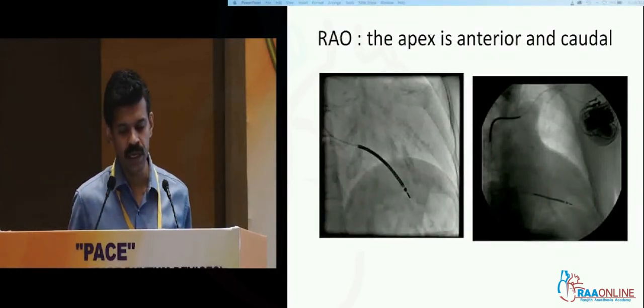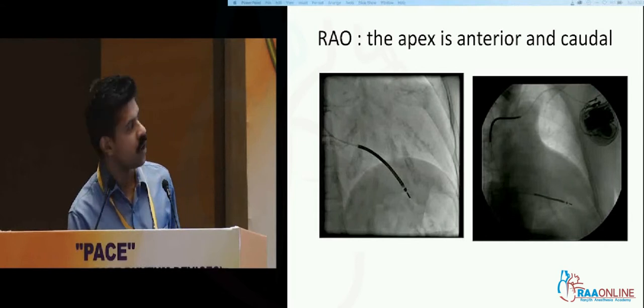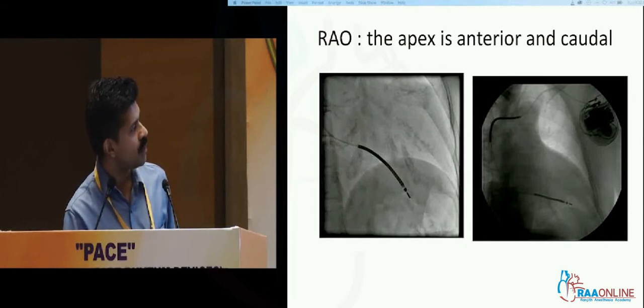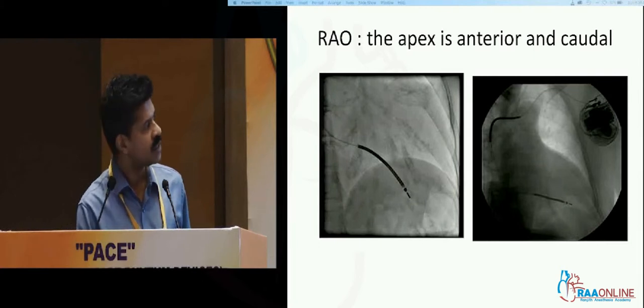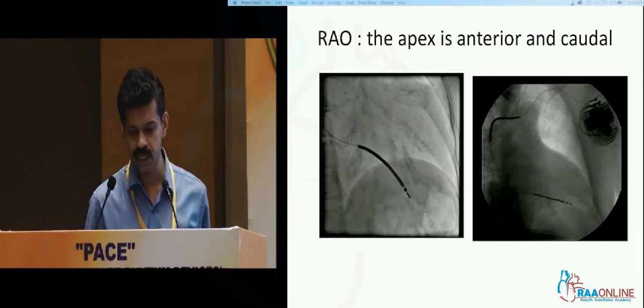The second point: in the right anterior oblique view, the apex is anterior and caudal. This lead is caudal but not at all anterior; this lead is anterior and reasonably caudal. So this one is near the apex, and this one is nowhere near the apex.